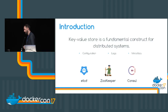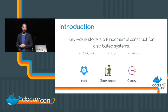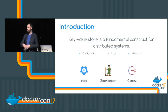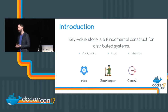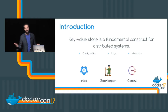Key value stores are a great construct to store and share data within a distributed system. They have been used increasingly for the past couple of years, in particular to store configuration data, logs, and metadata in general. You probably know key value stores through one of the three I've put on the slide: etcd, ZooKeeper, or Consul.